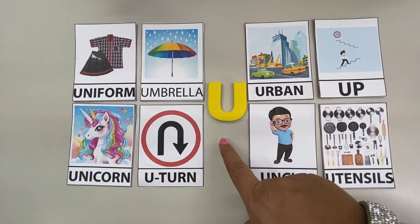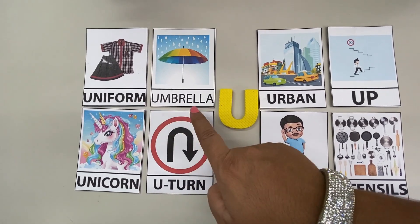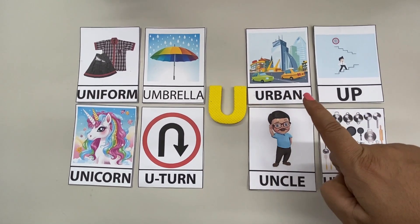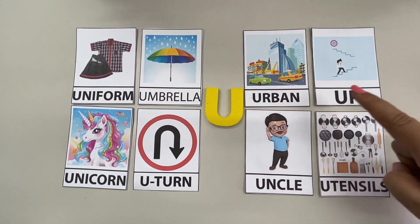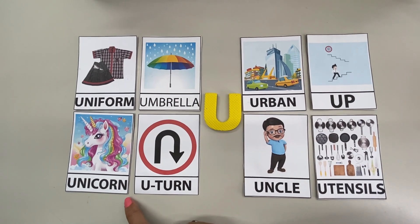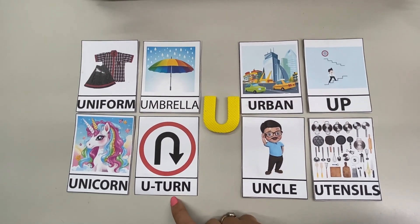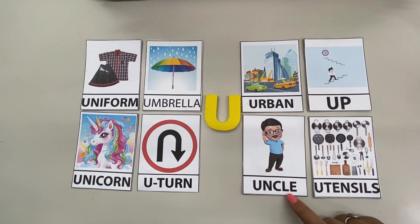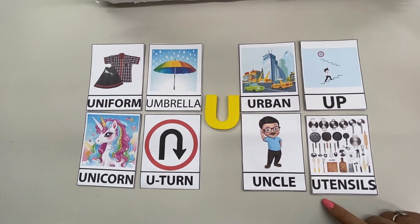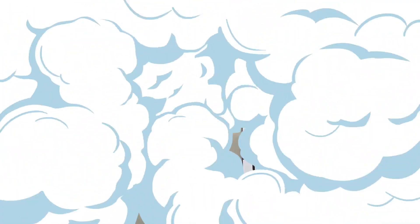Letter U. U for Uniform, U for Umbrella, U for Urban, U for Up, U for Unicorn, U for U-turn, U for Uncle, U for Utensils. Bye-bye kids!